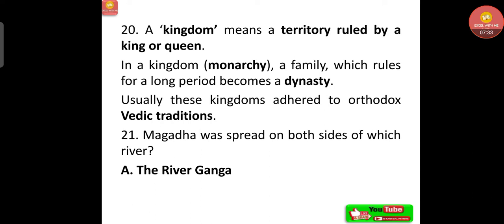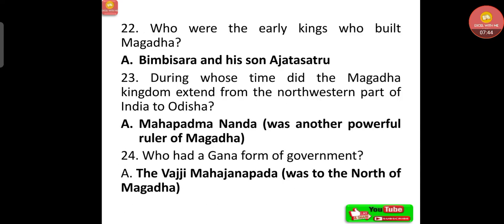Magadha was spread on both sides of the river Ganga. The early kings who built Magadha were Bimbisara and his son Ajatashatru. During the time of Mahapadmananda, another powerful ruler, the Magadha kingdom extended from the north-western part of India to Odisha. The Vajji Mahajanapada, which was to the north of Magadha, had a Gana form of government.